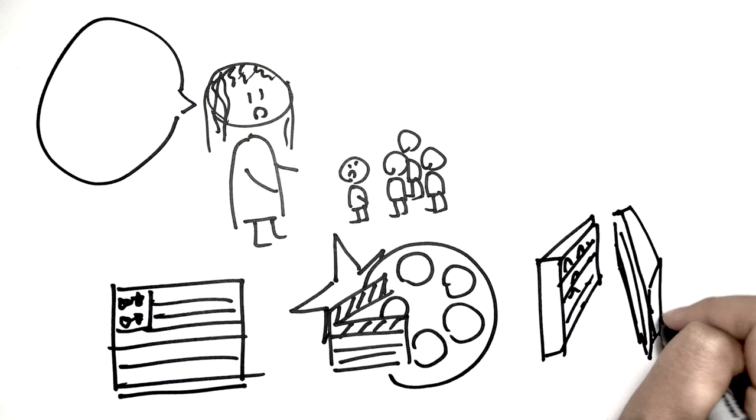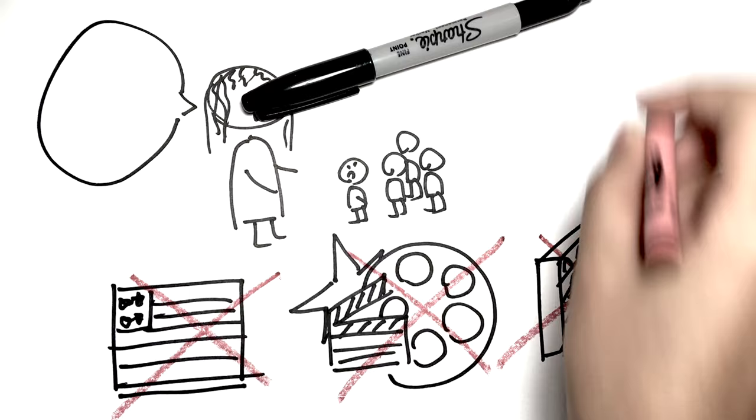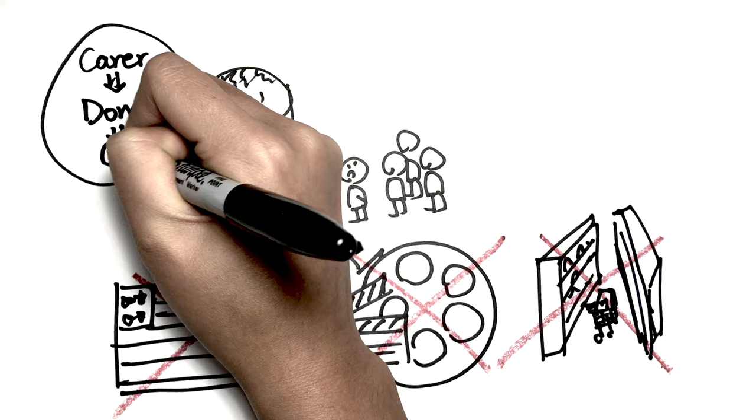The students will first become a carer, taking care of other donors, then they will start donations themselves. Eventually, they will complete. None of the students really understood this because they are still kids at the time. A few days later, Ms. Lucy was fired.